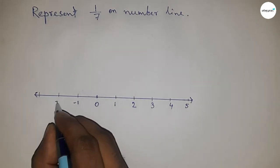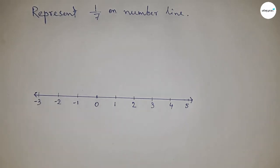on. On this side we mark -1, -2, -3, and so on. Next, we need to divide the length between